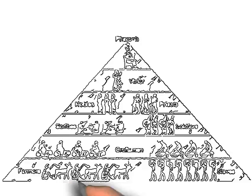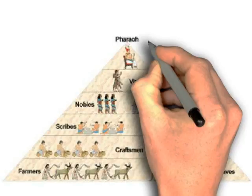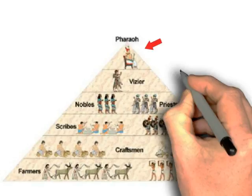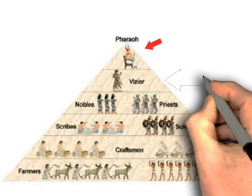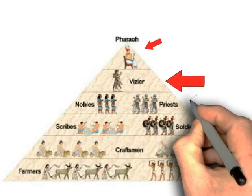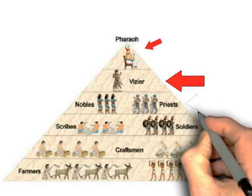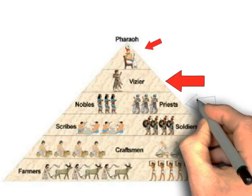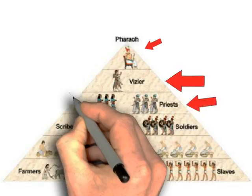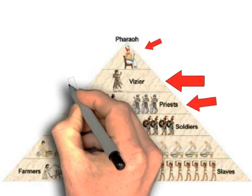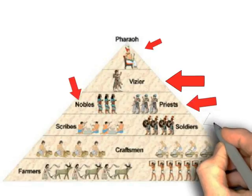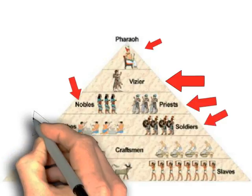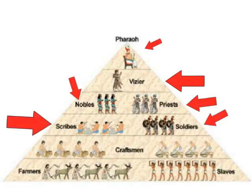The vizier was the chief minister of the pharaoh. He ensured taxes were collected and mastered a rare skill in Egypt — he could read and write. Only nobles could hold government posts, and they became wealthy from the tributes paid to the pharaohs. The priests would also get rich due to donations given to the gods. Under the government officials came the soldiers, who fought in wars or supervised construction projects when there was no war. Then you had the middle class — scribes, merchants, and craftsmen. At the bottom of the social pyramid were farmers and slaves.